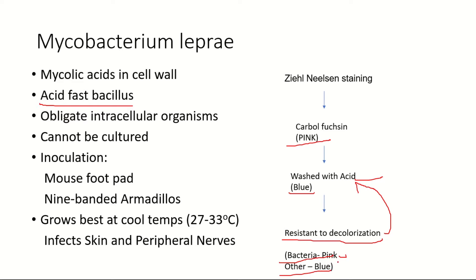Only the Mycobacterium will remain pink because they are resistant to decolorization from acids — hence the name acid-fast bacilli is given. They are also obligate intracellular organisms, meaning they cannot multiply outside the cell. They can only multiply and reproduce inside the cell.